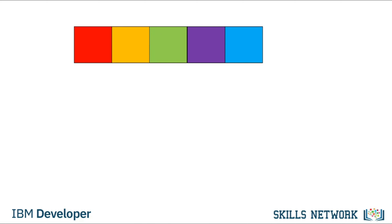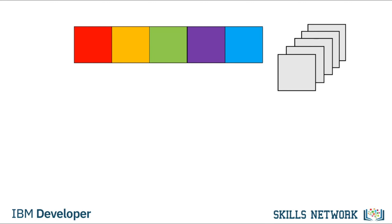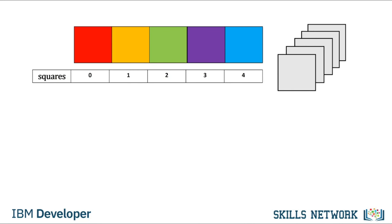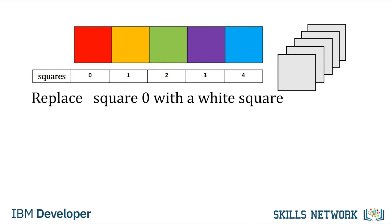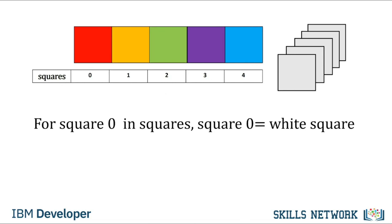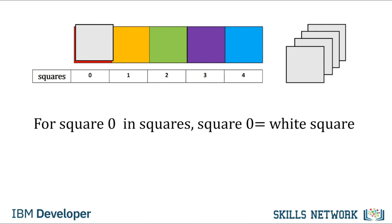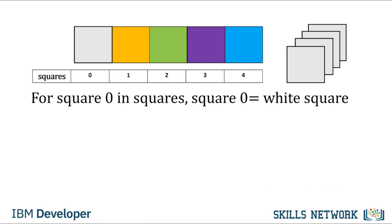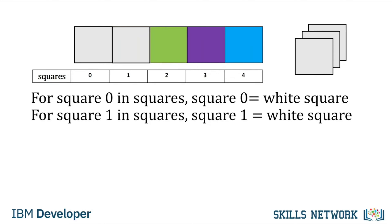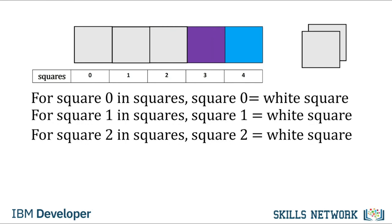Consider the group of coloured squares. Let's say we would like to replace each coloured square with a white square. Let's give each square a number and refer to all the group of squares as squares. If we wanted to tell someone to replace square zero with a white square, we would say: for square zero in squares, square zero equals white square. Similarly, for the next squares: for square one in squares, square one equals white square; for square two in squares, square two equals white square. We repeat the process for each square — the only thing that changes is the index.